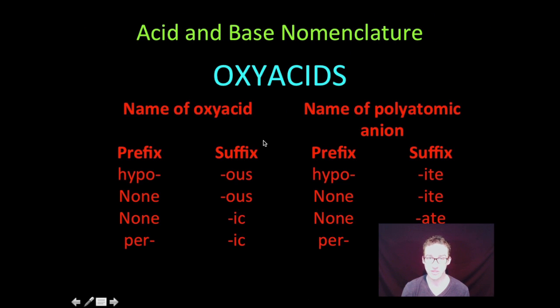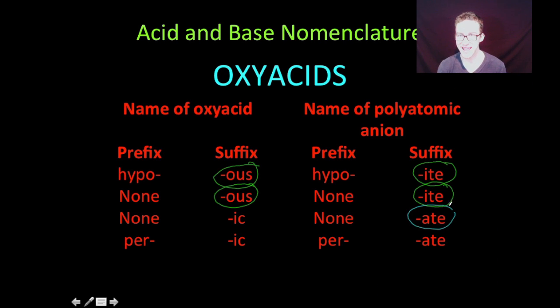As you look at your notes, there's sort of a breakdown of the different prefixes and suffixes that you will see in the oxyacids and how they correspond to the polyatomic ions. Again, notice here, anytime you see ite in the polyatomic ion, it corresponds to ous in the oxyacid. And anytime we see ate, it corresponds to ic in the oxyacid.